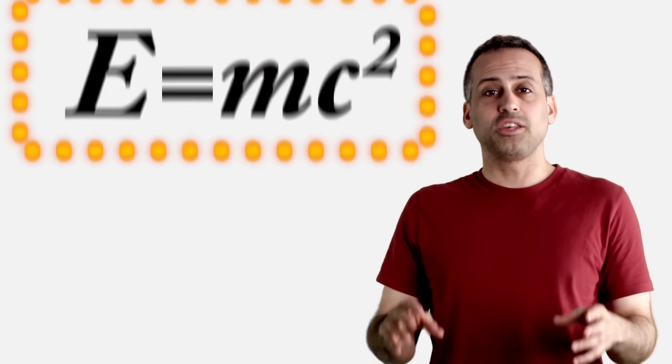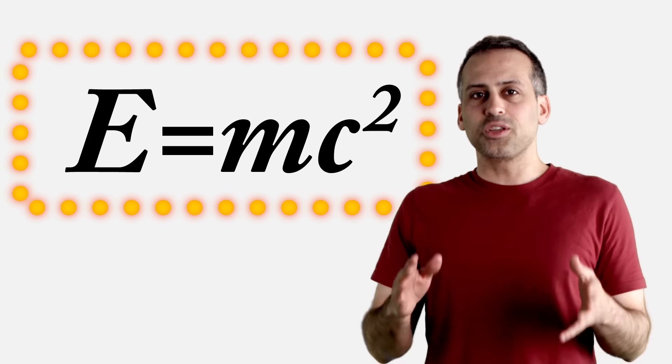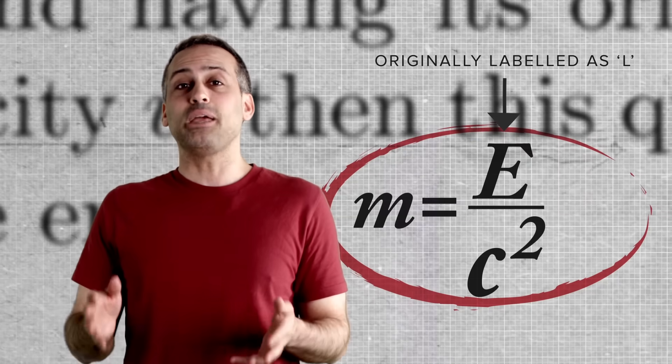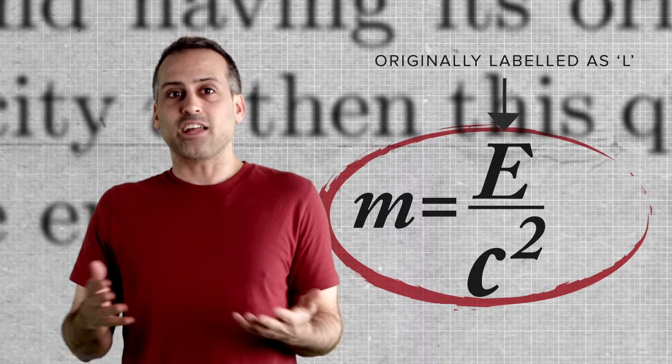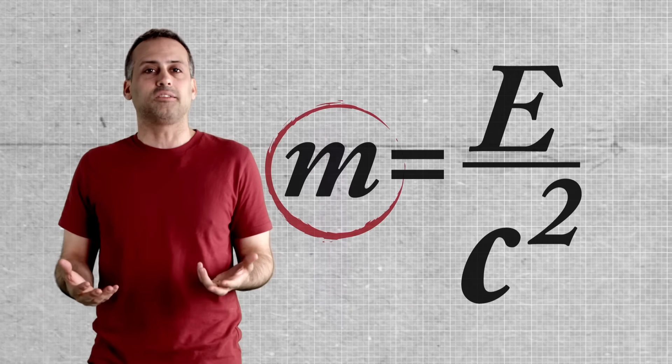E equals mc squared is probably the most famous equation in all of physics. But in his original 1905 paper, Einstein actually wrote it down differently, as m equals E divided by c squared. That's because, at its core, this cornerstone of physics is really a lesson in how to think about what mass is.